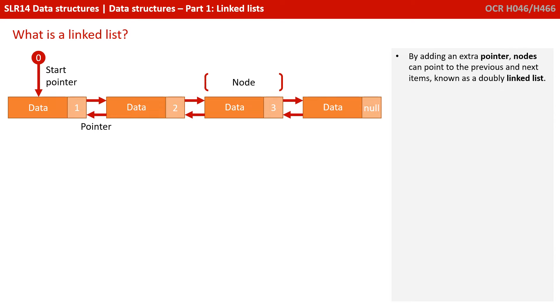By adding an extra pointer, nodes can point to the previous and next items, known as a doubly linked list.